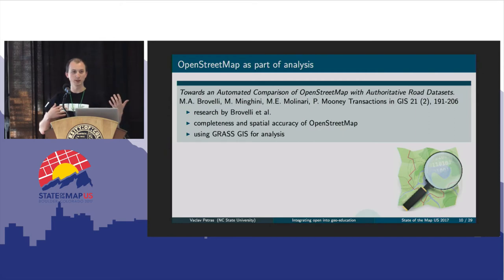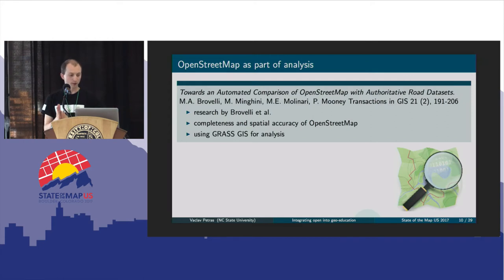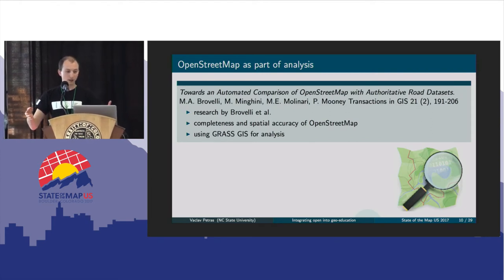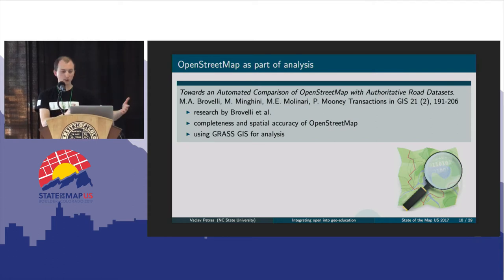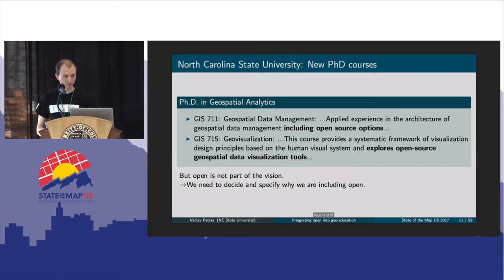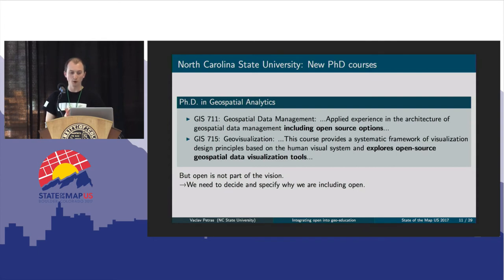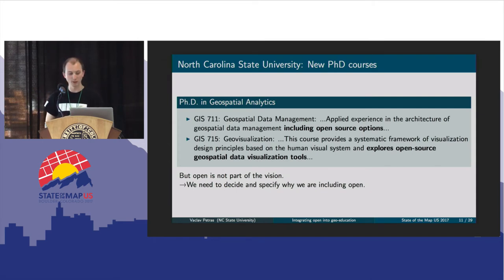How I would see OpenStreetMap in educational research is, for example, this paper from Braswell's research team, which was a comparison of OpenStreetMap data with authoritative road datasets — combining open source software like GRASS GIS for the analytical part and then the open data from OpenStreetMap. At North Carolina State University, we have now opened a new PhD program which actually mentions specifically open source software or open options in some course descriptions — but there is maybe one last issue: we don't really have it as part of the vision, so it's not clear why open source is suddenly part of these courses.